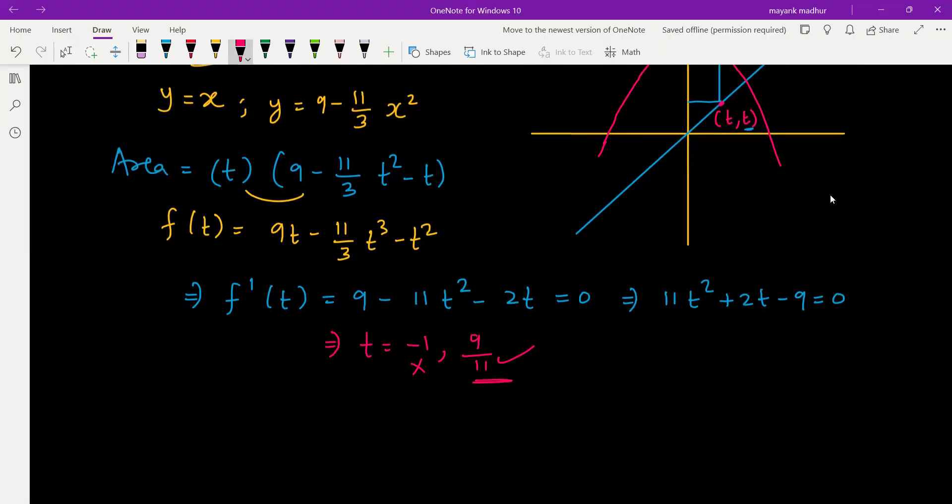So t equal to 9 by 11 is the only possibility. It must give you maxima, otherwise we can verify using double derivative also whether it is maxima or not. Differentiating this function one more time we get negative 22t, and putting 9 by 11 over here it is turning out to be negative, so that is a point of maxima.